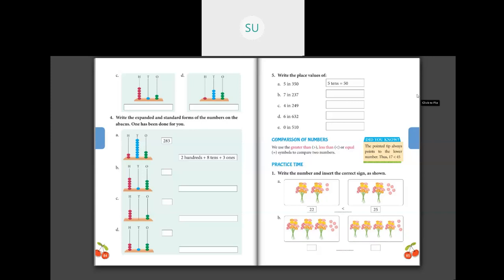For question C: 2 bunches gives 20 flowers, and the second group has 1 bunch plus 6 extra, which is 16. Since 20 is greater than 16, we use the greater than symbol. Then question D: 10 plus 10 plus 1 gives 21. The other group has 3 bunches plus 1, giving 31. Since 21 is smaller than 31, we put the less than sign.